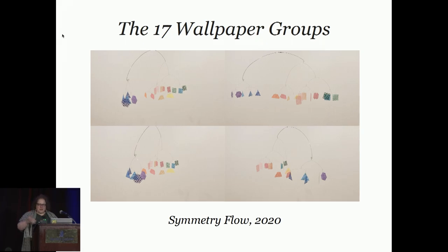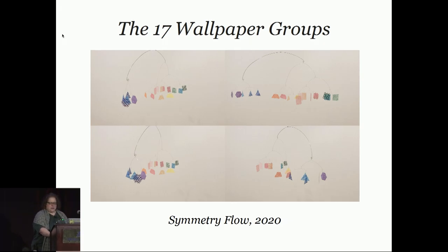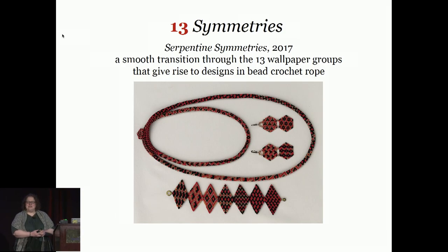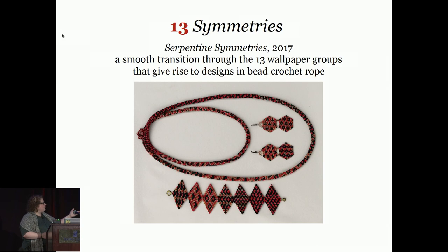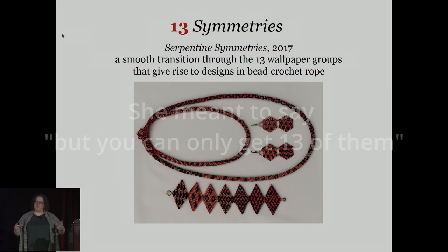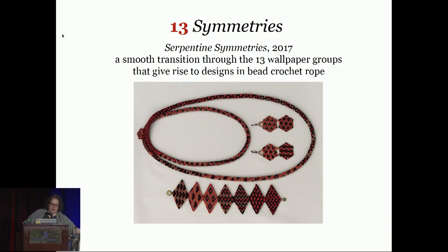I've done various things and collaborated with various people about the symmetries you can find in different settings. At Gathering for G13, this was the basis of my exchange gift. I had put together a printed card related to work that I did together with Ellie Baker — she's been an amazing collaborator. We were working through what you can do with bead crochet. You can use wallpaper patterns to design smooth patterns on bead crochet, but you can only get 17 of them, for reasons that are very interesting that I can't talk about now. This is the book that Ellie and I wrote — there's a chapter that talks about this.